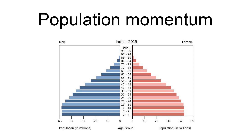Population momentum is a consequence of the demographic transition. It explains why a population will continue to grow even if the fertility rate declines. This occurs because it is not only the number of children per woman that determines population growth, but also the number of women in reproductive age. When the fertility rate reaches the replacement rate and the population size of women in the reproductive age bracket stabilizes, the population achieves equilibrium and population momentum comes to an end. Population momentum is defined as the ratio of the size of the population at that new equilibrium level to the size of the initial population.